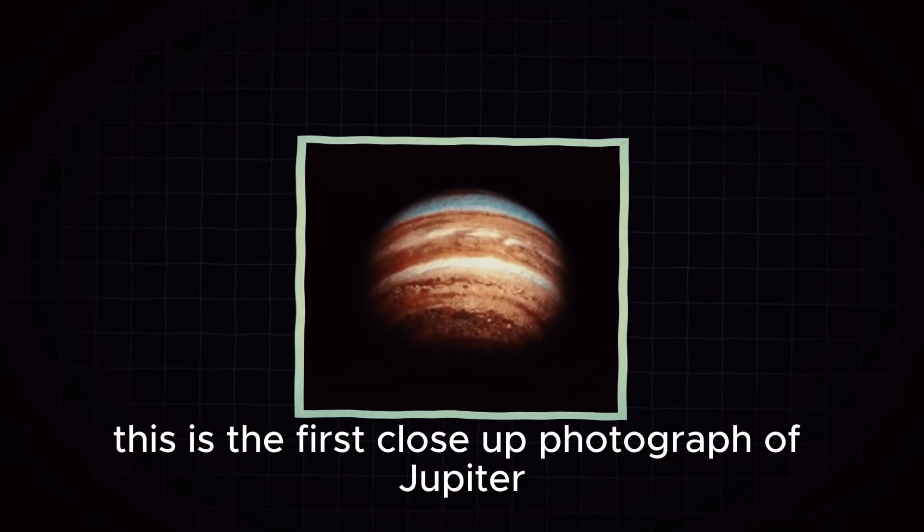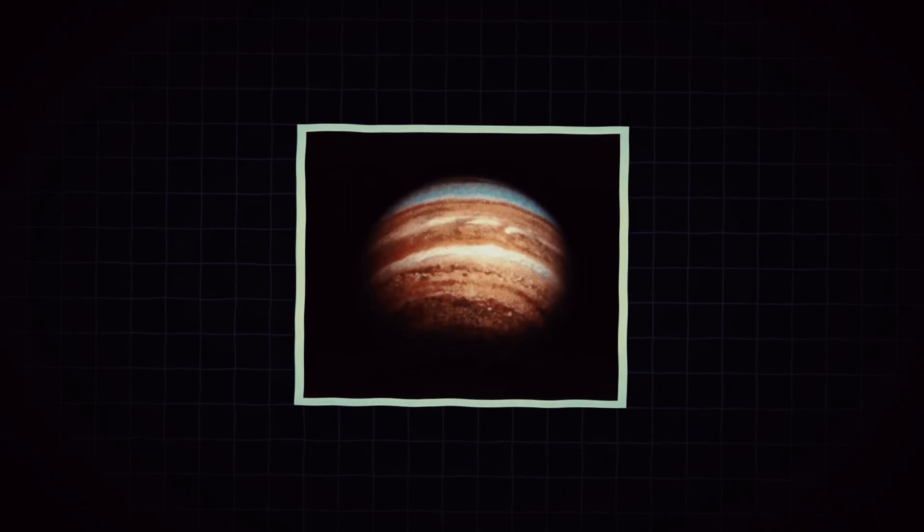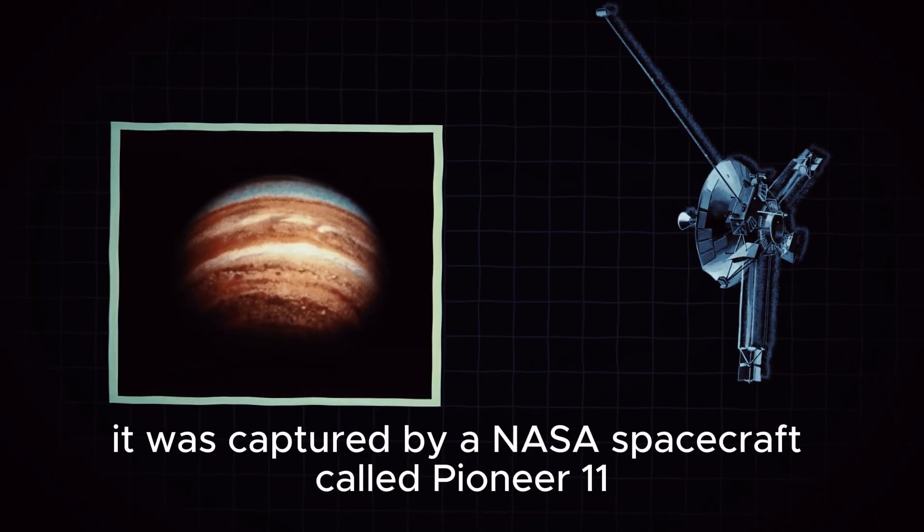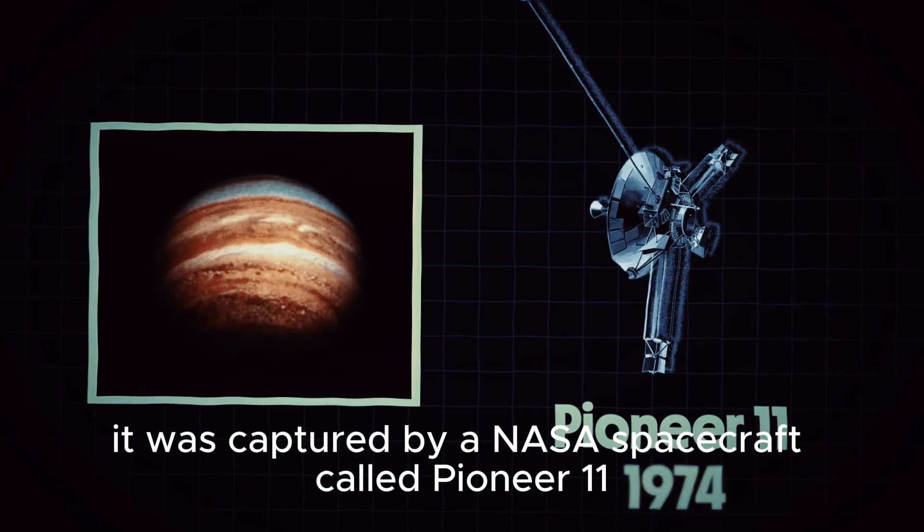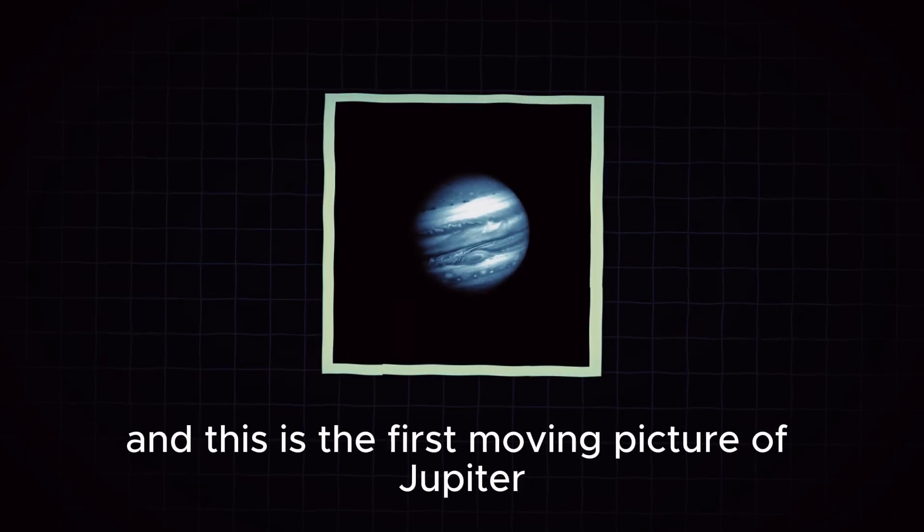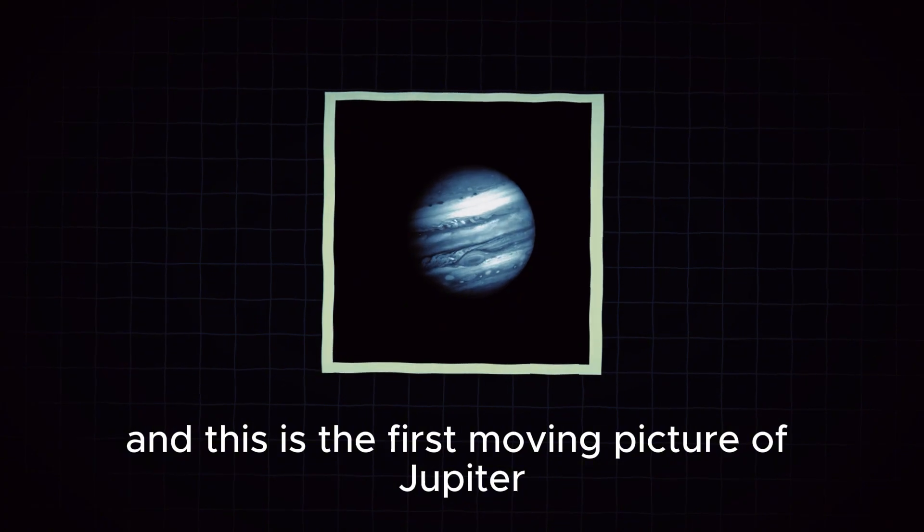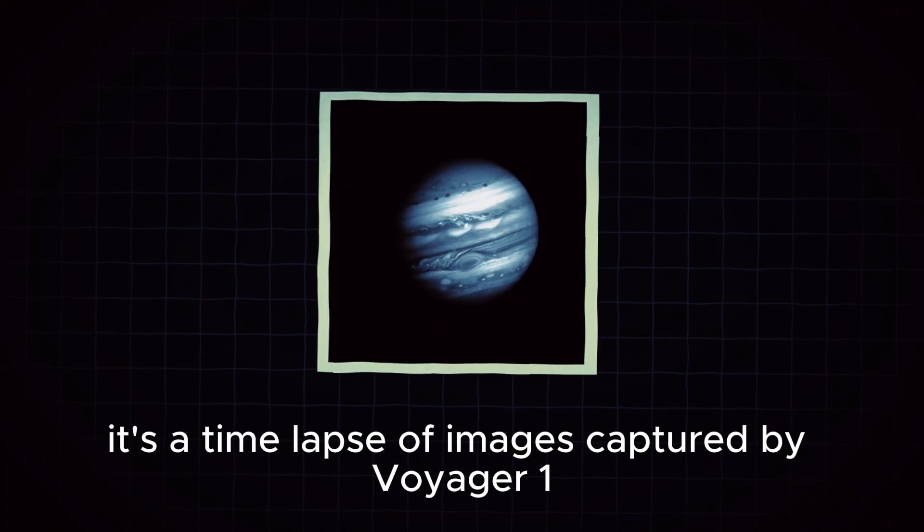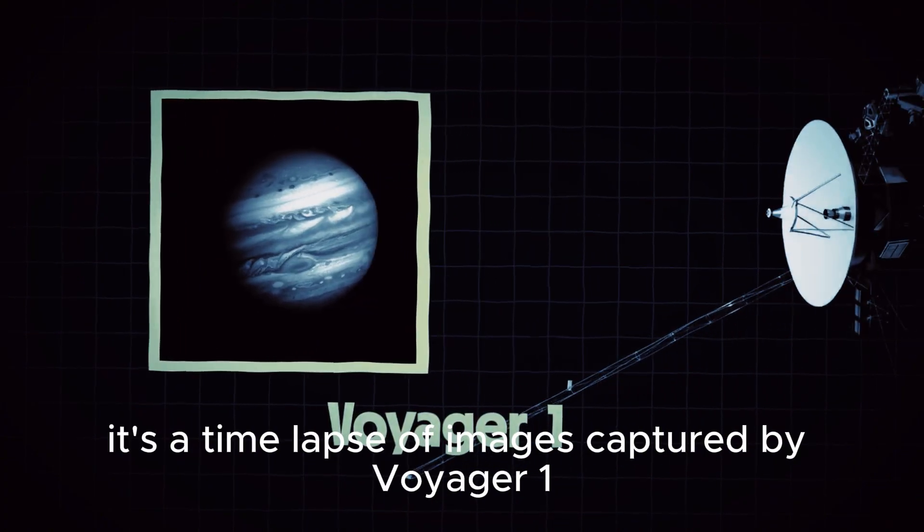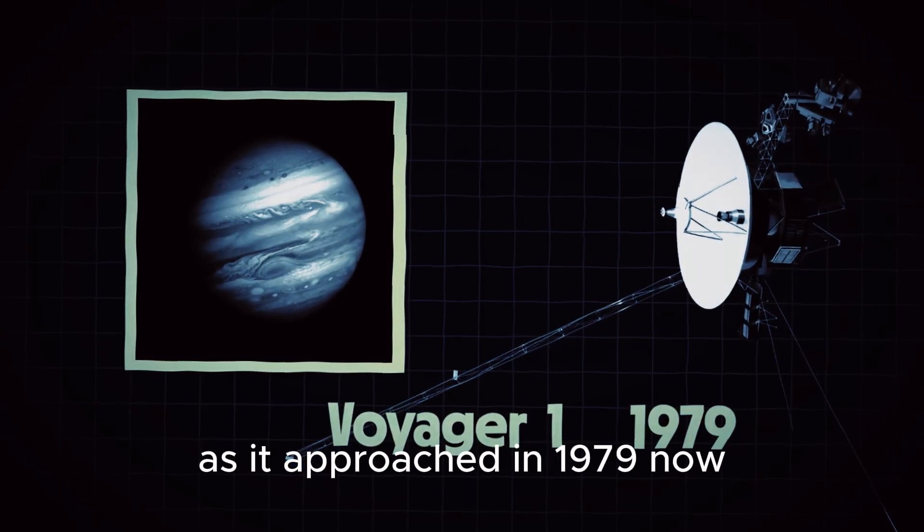This is the first close-up photograph of Jupiter ever taken. It was captured by a NASA spacecraft called Pioneer 11 in the year 1974. And this is the first moving picture of Jupiter. It's a time-lapse of images captured by Voyager 1 as it approached in 1979.